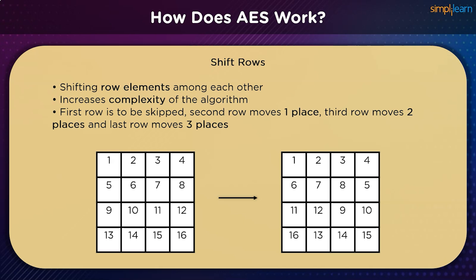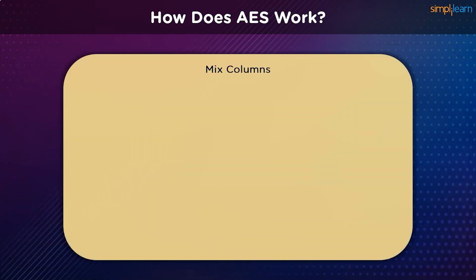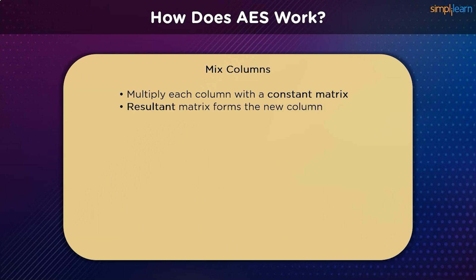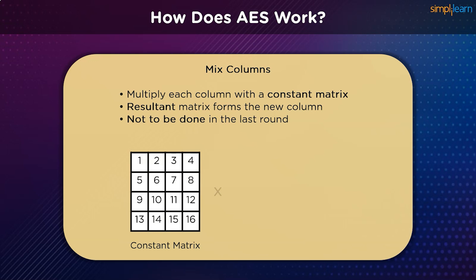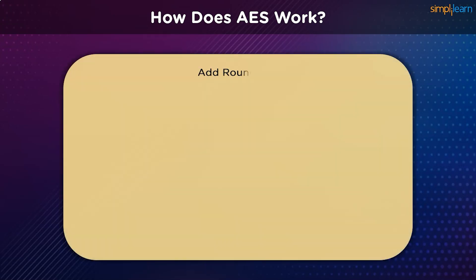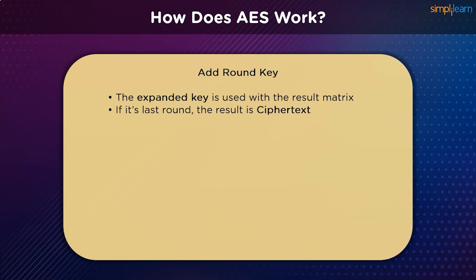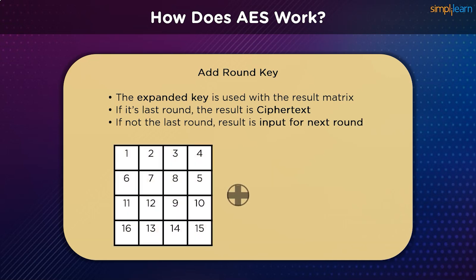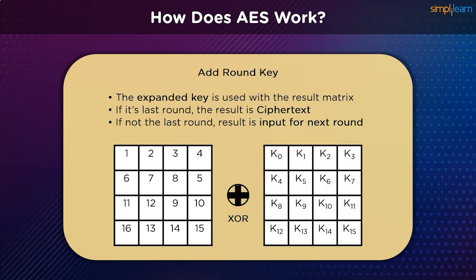To boost complexity, in the mix columns step, each column of four bytes is replaced using a special mathematical function. The function takes four bytes of a column as input and outputs four completely new bytes, resulting in a new matrix of the same size of 16 bytes. This phase is not performed in the last round of the iteration. When adding a round key, the 16 bytes of the matrix are treated as 128 bits and XORed with the 128-bit round key. If it is the last round, the output is the ciphertext; otherwise the resulting 128 bits are interpreted as 16 bytes and another round begins.